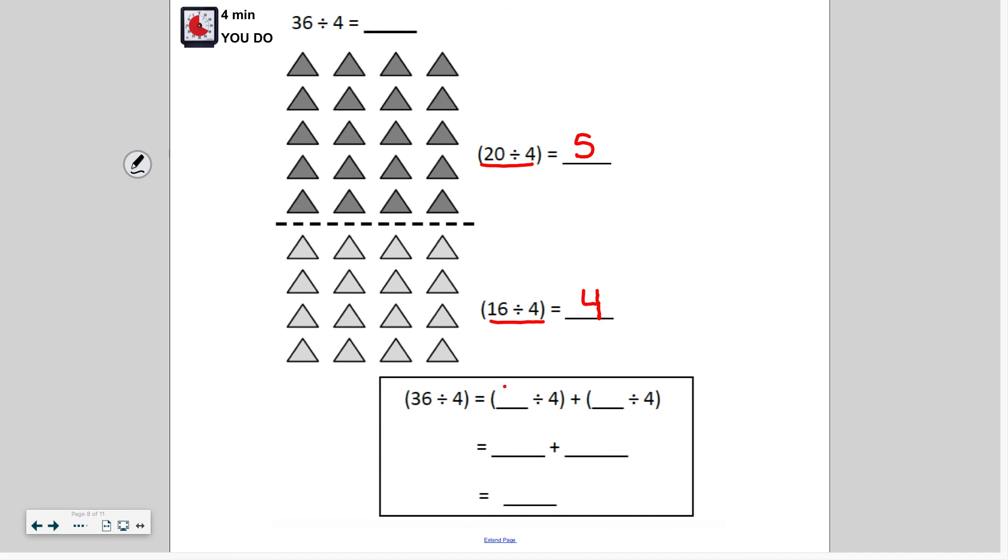So if I fill in the blanks on here the first one was 20 divided by 4 plus 16 divided by 4 because 20 plus 16 adds up to 36. So 20 divided by 4 is 5. And 16 divided by 4 is 4. And 5 plus 4 is 9. So our final answer 36 divided by 4 equals 9.